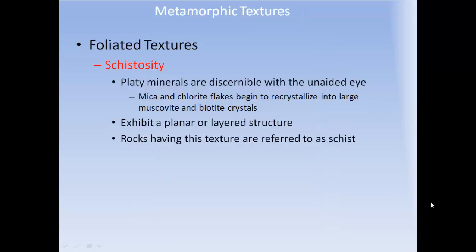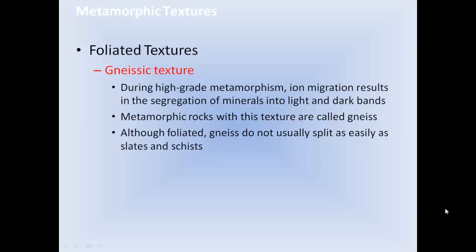Schistosity: platy minerals are discernible with the unaided eye. Mica and chlorite flakes begin to recrystallize into large muscovite and biotite crystals, making a very shiny rock with a planar or layered structure — rocks with this texture are referred to as schist. Gneissic texture: during high-grade metamorphism, ion migration results in the segregation of minerals into light and dark bands. Metamorphic rocks with this texture are called gneiss, and although foliated, gneisses do not usually split as easily as slates and schists.